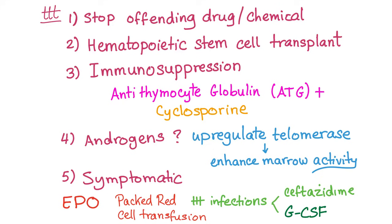How to treat this aplastic anemia? First, stop the offending drug or chemical if there is any. Second, hematopoietic stem cell transplant — allograft. If you have a donor, you're a lucky person. If you don't have a donor, let's do some immunosuppression. T cells are secreting cytokines destroying your myeloid cells, so we give antithymocyte globulin and cyclosporine as a form of immunosuppression — they are given together. Androgens may help, though there is not enough evidence. How do androgens help? They upregulate telomerase. Telomerase will preserve the telomeres, which will enhance the bone marrow activity — and our bone marrow is very lazy and has failed us.